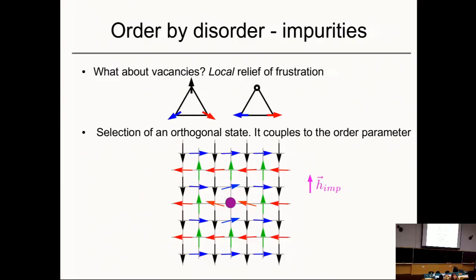There's another way to lift the frustration — an interesting route is to put disorder or impurities. Take the simplest example: pick a triangle with the 120-degree state and put an impurity by removing a spin. You have what is called local relief of frustration. When you remove this spin, those two neighboring spins can become collinear and maximize their energy. So removing a spin removes the constraint — it's called local relief of frustration. Disorder can also help lift the degeneracy and, in principle, could select a different ground state. Indeed, if you pick the J1-J2 model at the classical level and put an impurity in the center, a specific ground state comes out.